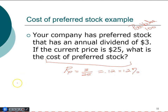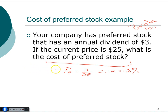To summarize: for cost of common stock you can use either the constant dividend growth method or the capital asset pricing model. For cost of debt, you compute the yield to maturity. For cost of preferred stock, you compute the required return for a perpetuity.